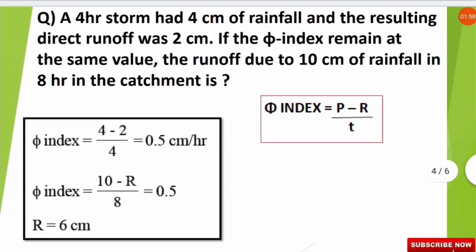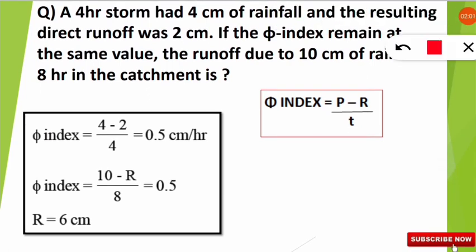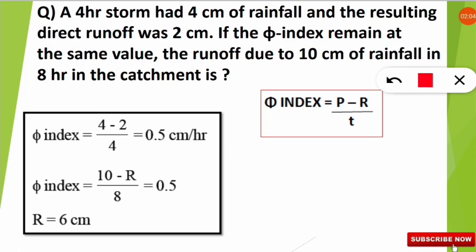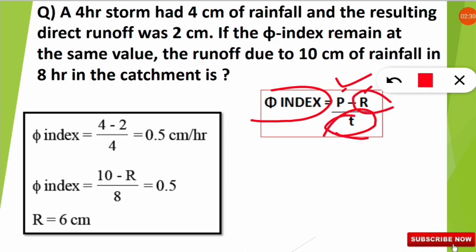There is a simple formula to solve this. The phi index, also known as the phi index of infiltration, measures how much water has infiltrated. The formula is: Phi index = (P − R) / T. Here P is total precipitation (total rainfall), R is the runoff, and T is the duration or time of effective rainfall — how long the rainfall lasted.